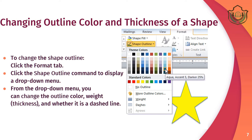Students, you can also change the outline color and thickness of a shape. To do this, click on the shape, then click on the Format tab, then click on the Shape Outline command, and choose the outline color and thickness according to your choice.